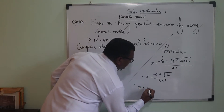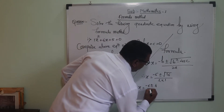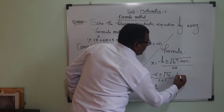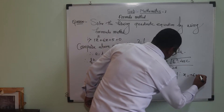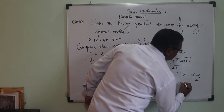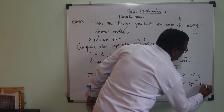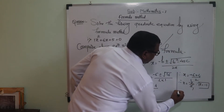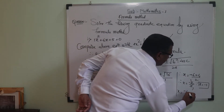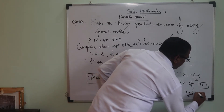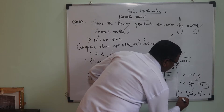Therefore x is equal to minus 6 plus or minus 4, upon 2. Taking the positive case: x equals minus 6 plus 4 upon 2, which is minus 2 upon 2, giving x equals minus 1. Taking the negative case: x equals minus 6 minus 4 upon 2, which is minus 10 upon 2, giving x equals minus 5.